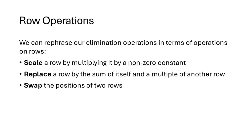The equation operations we've been using can be rephrased as row operations. Rather than multiplying both sides of an equation by a non-zero constant, we multiply all entries in a row by a non-zero constant. Instead of replacing an equation by the sum of itself and a multiple of another equation, we replace a row by the sum of itself and a multiple of another row. Or we can swap the positions of two rows, though we won't see much swapping until later.